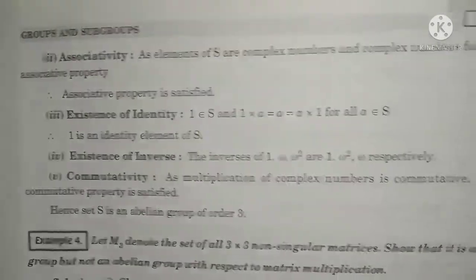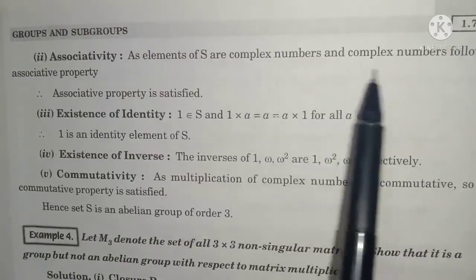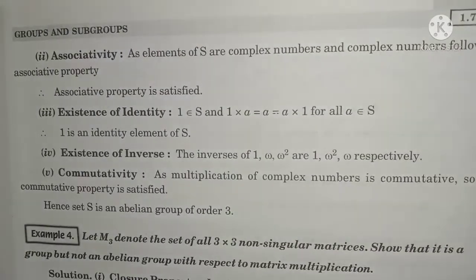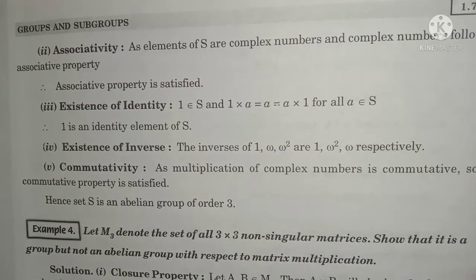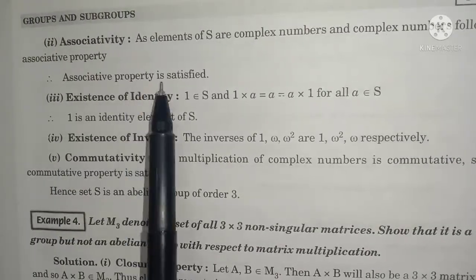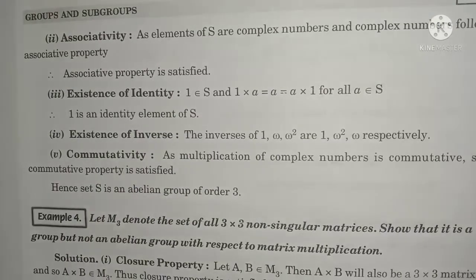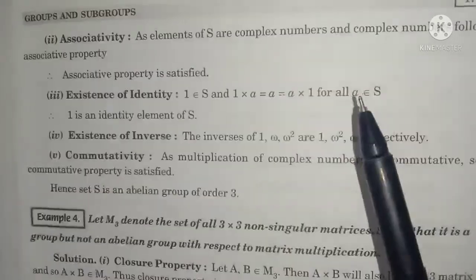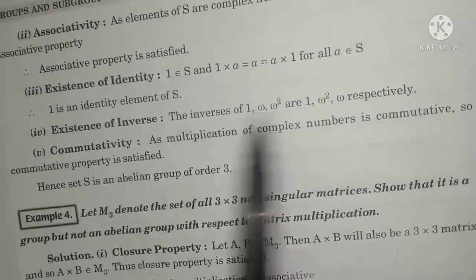For associativity: the elements of S are complex numbers, and complex numbers always follow the associative property under multiplication. So associativity is satisfied. For existence of identity: under multiplication, the identity is 1, and 1 belongs to S = {1, ω, ω²}. So a×1 = 1×a = a for all a in S, hence existence of identity is satisfied.